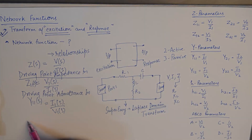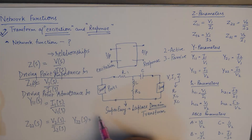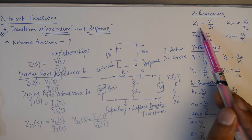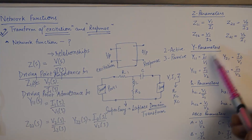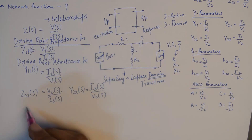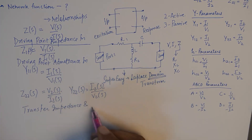These are the two driving point functions for port 1. Similarly, Z22 is the driving point impedance function at port 2, expressed as the ratio of V2(s) to I2(s). Y22, expressed in the s-domain, is the ratio of I2(s) to V2(s). The driving point functions Z11, Z22, Y11, and Y22 take their definitions and nomenclatures directly from Z and Y parameters.